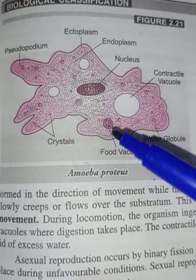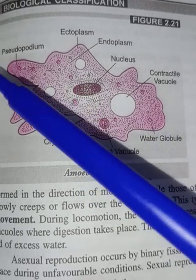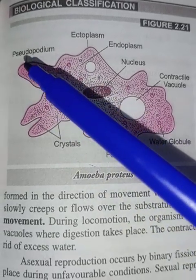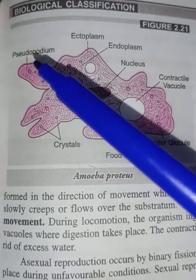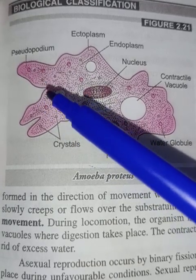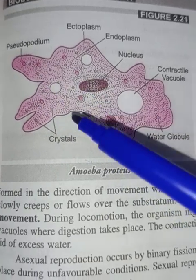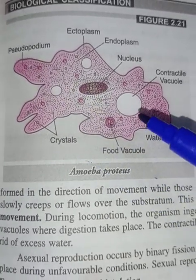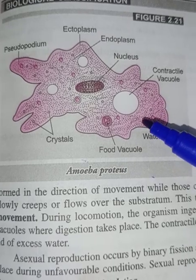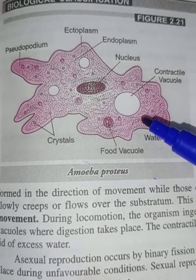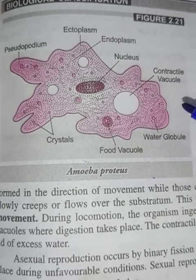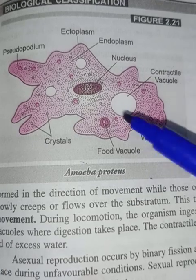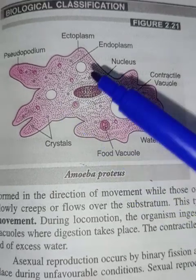This is the pseudopodia. With the help of this pseudopodial part, movement occurs — hence it shows pseudopodial movement. There are two types of vacuoles in Amoeba: contractile vacuoles and food vacuoles.